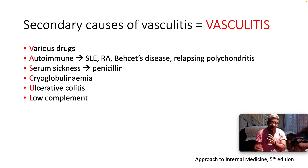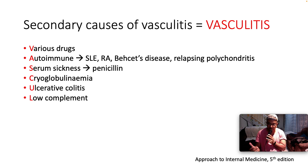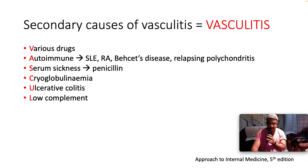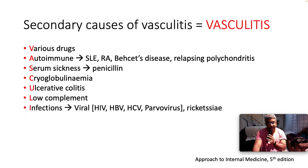There's a whole host of causes of low complement — it could be cryoglobulinemia, it could be lupus, it could be IgA nephropathy, Henoch-Schönlein nephritis, post-streptococcal glomerulonephritis, or membranoproliferative glomerulonephritis.